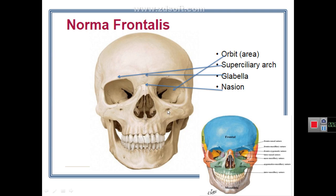Below the inferior orbital margin, the maxilla shows a foramen called the infraorbital foramen, which lies in the same vertical line as the supraorbital notch or foramen. The infraorbital foramen transmits the infraorbital nerve and infraorbital vessels. The maxilla also forms the prominence of the cheek.